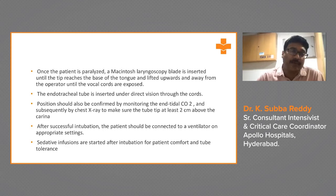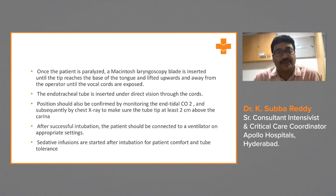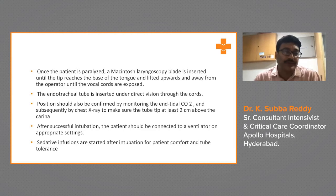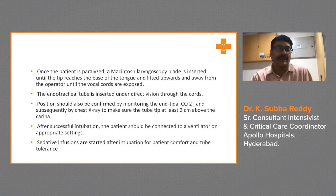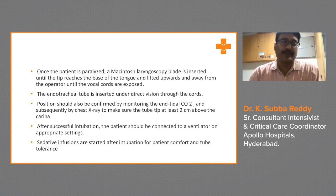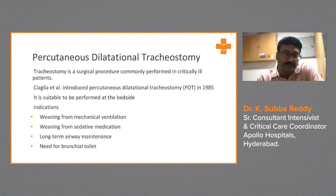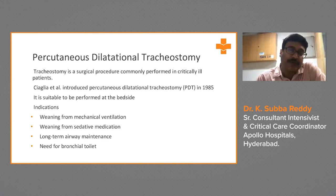Once the patient is paralyzed, the Macintosh laryngoscope blade is inserted until the tip reaches the base of the tongue, then lifted upwards and away from the operator until the vocal cords are exposed. The endotracheal tube is inserted under direct vision through the cords. Position should be confirmed by monitoring end-tidal CO2 and subsequently by chest X-ray to ensure the tip is at least two centimeters above the carina. After intubation, connect the patient to a ventilator and start sedative infusions for patient comfort and tube tolerance.